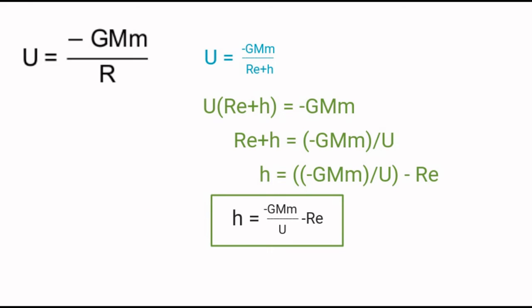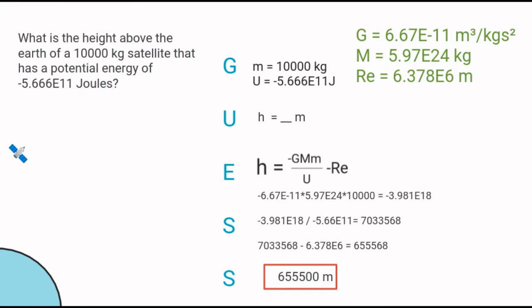That would be a good thing to write down in your handy-dandy notebook, noting that this is altitude h and this is the radius of the Earth Re. Here's the problem: What is the height above the Earth of a 10,000 kilogram satellite that has a potential energy of negative 5.666 times 10 to the 11th joules?